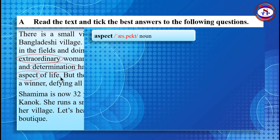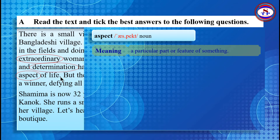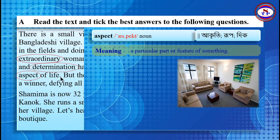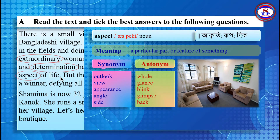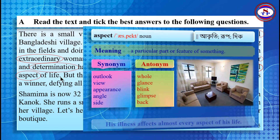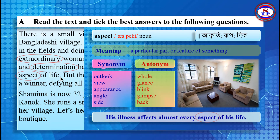The word 'aspect' is used here as a noun. That means a particular part or feature of something. Here you can see in the picture a particular feature of a house. The synonyms of aspect are: Outlook, View, Appearance, Angle, and Sight. The antonyms of aspect are: Hole, Glance, Blink, Glimpse, and Back. Look at the example: His illness affects almost every aspect of his life.